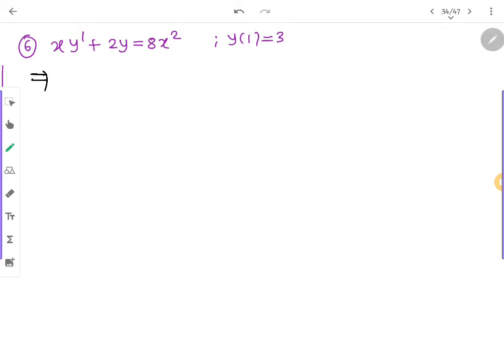So we skip this as the wrong question. Now problem 6: x dy by dx plus 2y is equal to 8x square. So rewrite this as dy by dx plus 2 upon x y is equal to 8x.